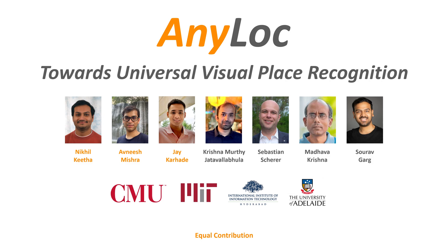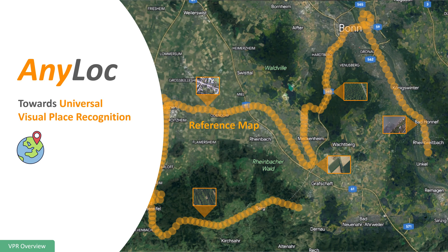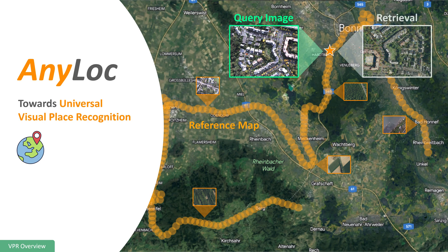We present AnyLoc, an approach towards Universal Visual Place Recognition (VPR). Imagine a robot exploring a place for the first time — it creates a reference map of images captured along the way. When the same robot returns and observes a new query image, the task of VPR is to find the best image match for that query image from the pre-built reference database.